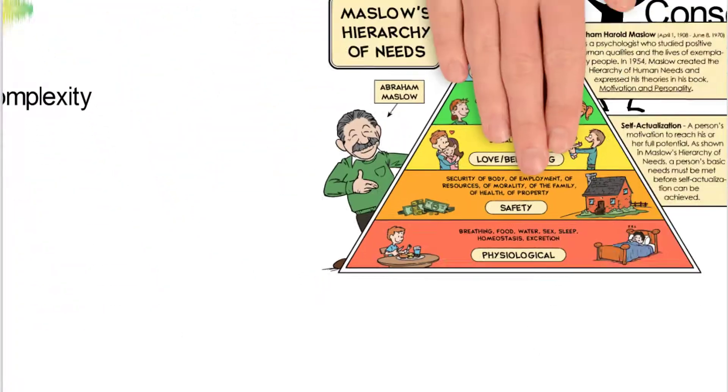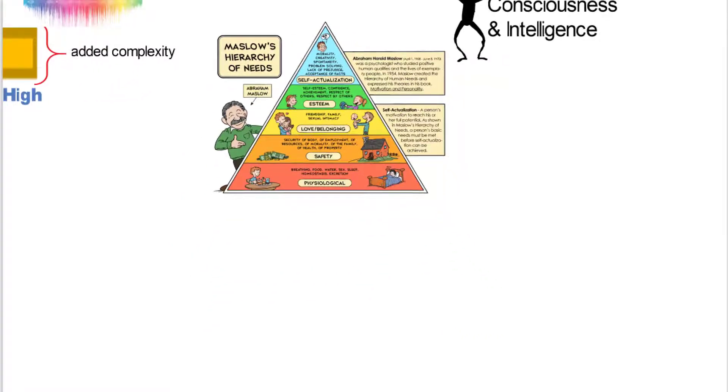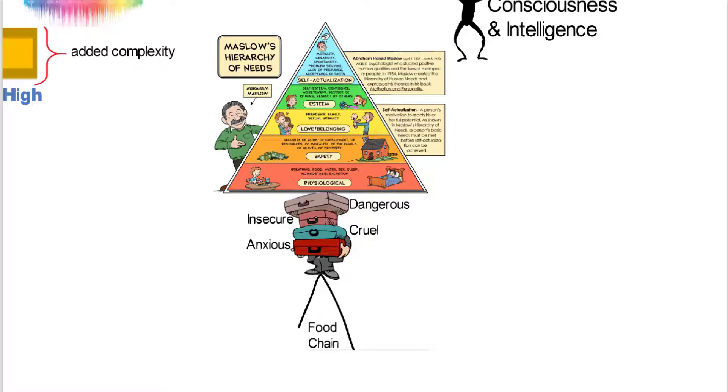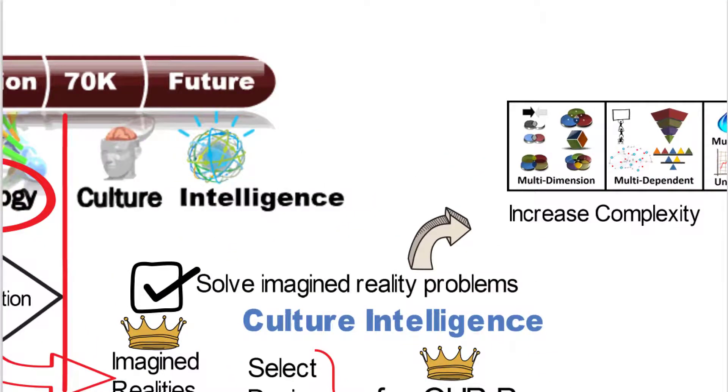So if we take Maslow's hierarchy of needs, do we need both consciousness and intelligence to deal with all of those? And the challenge is that we are considered a very dangerous, cruel, insecure, and anxious species, and there we are in control.